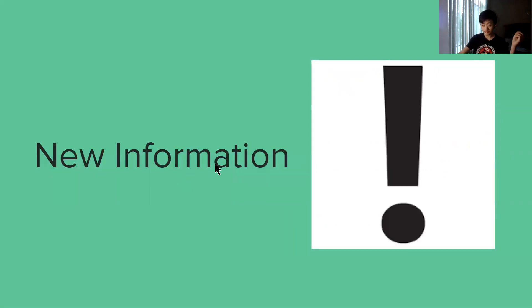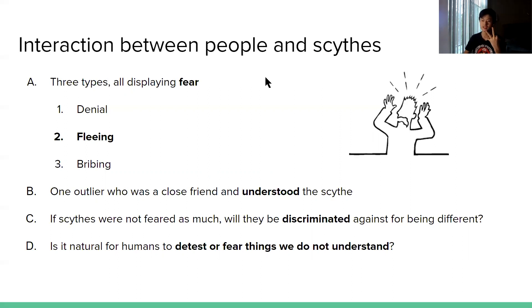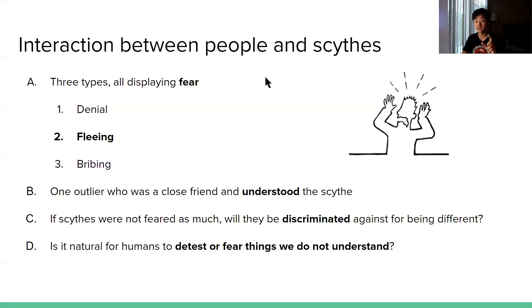New information. In the interaction between people and Scythe — in chapter four — Citra saw that there were three types of reactions when seeing a Scythe. First was denial, second was fleeing, and third was bribing. Denial is just ignoring the Scythe while fleeing is escaping while both sides are present. I find that especially interesting because do Scythe normally plan out who to kill? Because Scythe Faraday just found a random lady in the parking lot and then pursued her.